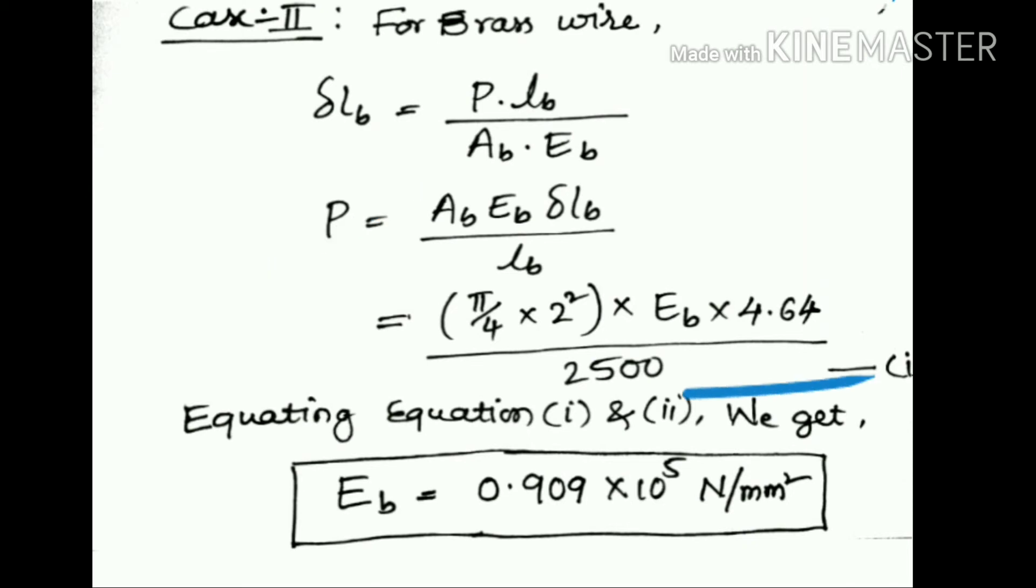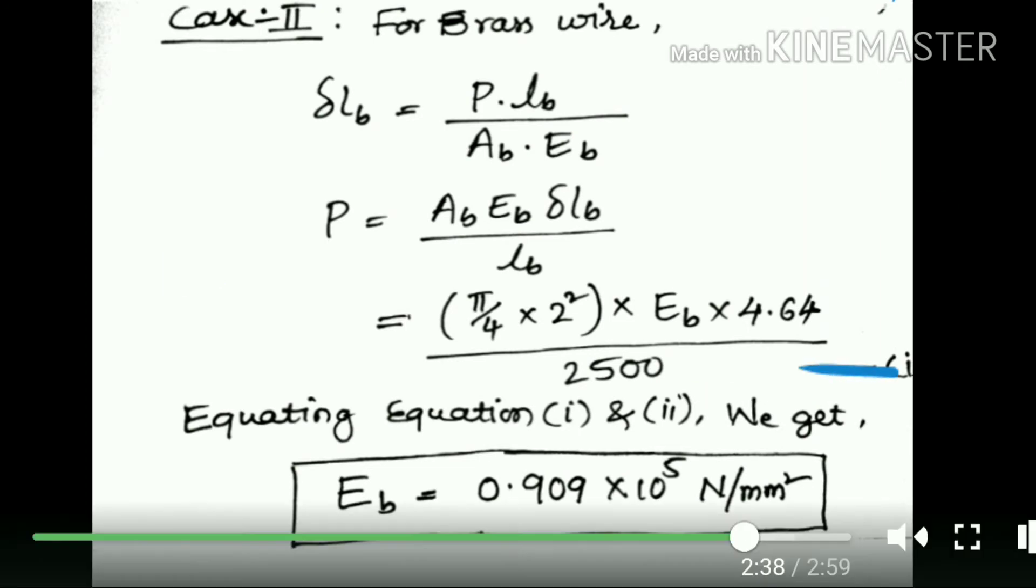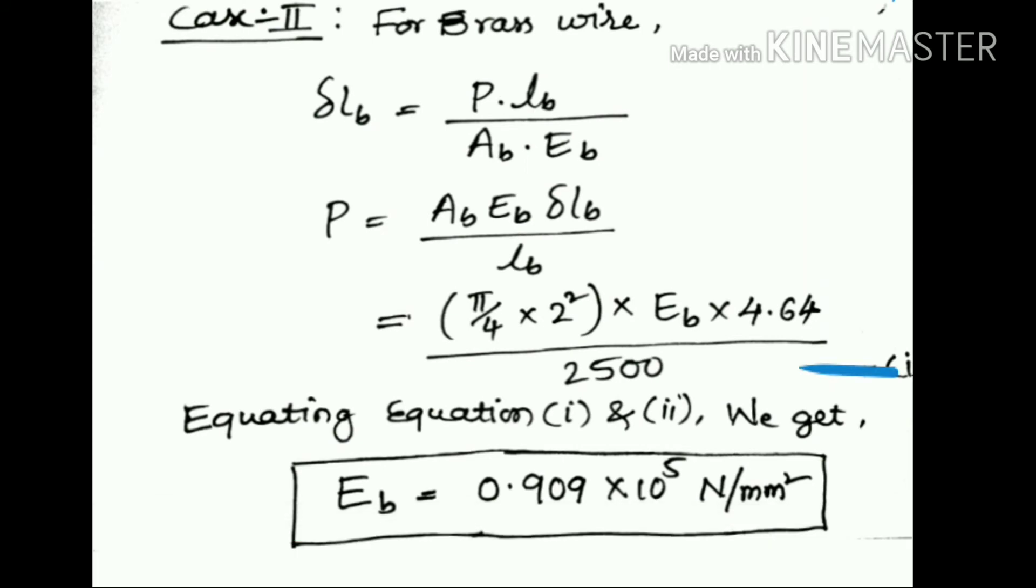Now equating equations 1 and 2, we calculate the Young's modulus for the brass material. Equating the two equations, we get the Young's modulus for brass: 0.909 x 10^5 Newton per millimeter squared.